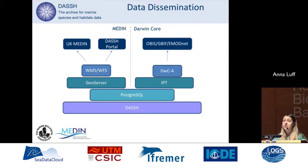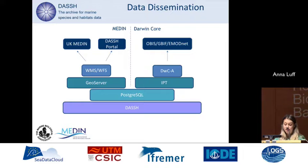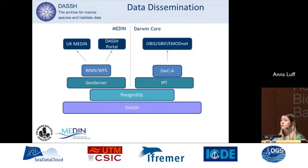Our data are archived in DASH in a Postgres database and disseminated in two primary formats: a Medin format and a Darwin Core format. Data disseminated in the Medin standard are made available via our DASH online portal, which is built on GeoServer, where data can be queried and downloaded in WMS and WFS standards. Data is also available in CSV format via a URL published in the discovery metadata on the Medin portal.